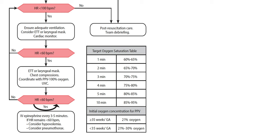If the heart rate is less than 60, make sure you have your monitor on, consider an LMA or endotracheal tube, and get expert advice. If the heart rate remains below 60 despite at least 30 seconds of PPV, turn the FiO2 immediately to 100% and start chest compressions, then review after 60 seconds. After 30 seconds of PPV and another 60 seconds of chest compressions, if the heart rate remains below 60, consider epinephrine.